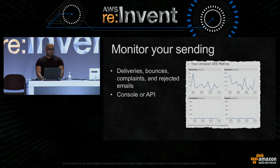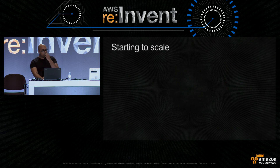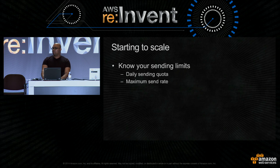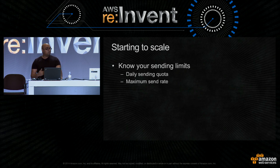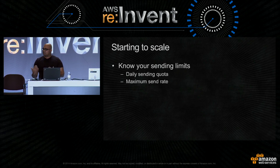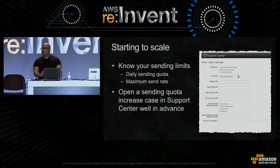Once you know how much email you're sending, it's a good idea to compare that to how much you're allowed to send. Every account on SES has two limits: the daily sending quota — the volume of email allowed on any given day — and the maximum send rate, which is the per-second email rate at which you'd be throttled. Knowing these and comparing them to your actual sending will tell you if you need an increase. You can follow a link from our public documentation to request an increase. We recommend doing this well in advance of ever reaching the limits so your business continuity is not affected. Typically we try to turn these around within 24 hours.